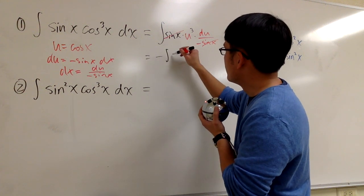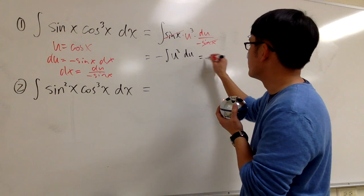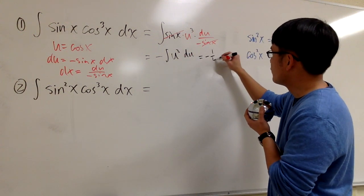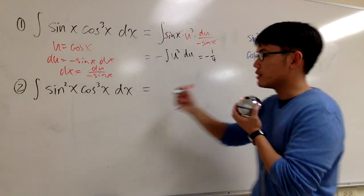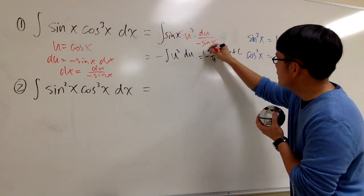And the integral of u to the third power du, and of course you get the power rule backwards, right? So altogether you are going to end up negative 1 over 4, u to the fourth power, and u is cosine, so it's cosine to the fourth power x plus c, and this is it.